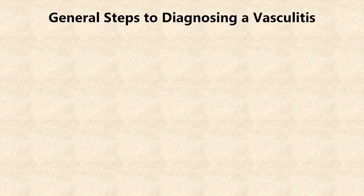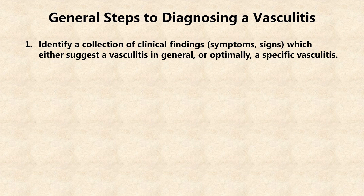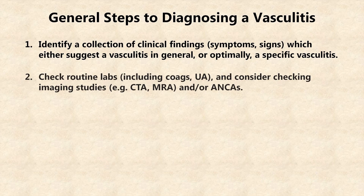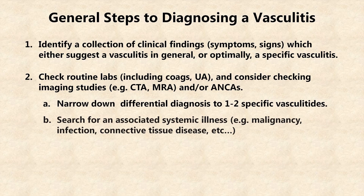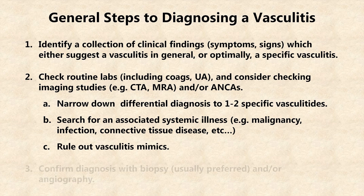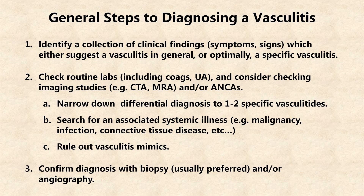So what are the general steps to diagnosing a vasculitis? First, the clinician must identify a collection of clinical findings which either suggest a vasculitis in general, or optimally, one or two specific vasculitides. Second, one should check routine labs including coagulation tests and a urinalysis, and consider checking imaging studies and or anti-neutrophil cytoplasmic antibodies. This will help to narrow down the differential diagnosis, search for an associated systemic illness that would make the vasculitis secondary, and to rule out vasculitis mimics. Finally, the diagnosis of a vasculitis should be confirmed, preferably with biopsy of a clinically affected organ, and or angiography.